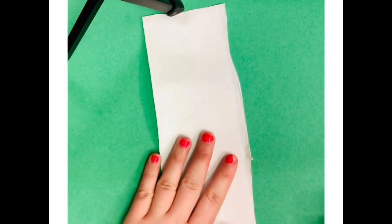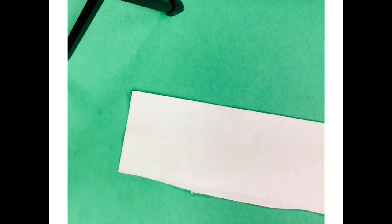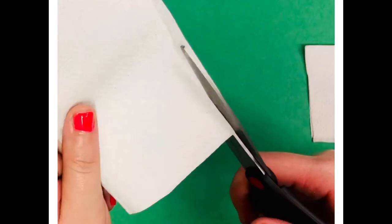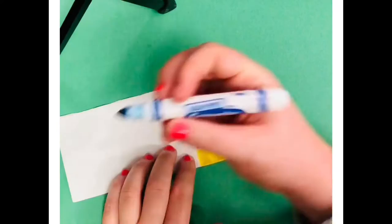So here I have my paper towel. I'm using a two-layer paper towel. If it's one layer you can fold it over. Measure about seven inches and then cut it out. I'm just trimming the end here to make it nice and straight.